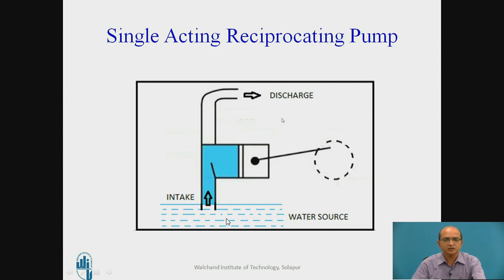This is regarding the working of the single acting reciprocating pump, which is used for lifting water or carrying water from one location to another — for industrial, agricultural, or residential applications where water needs to be lifted from the ground level tank to an overhead tank located at the 5th or 10th floor.